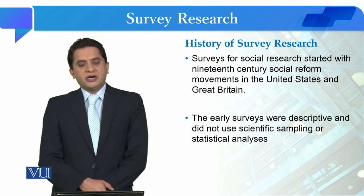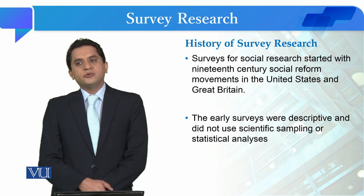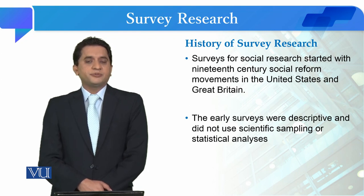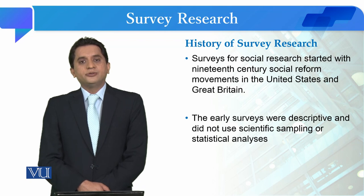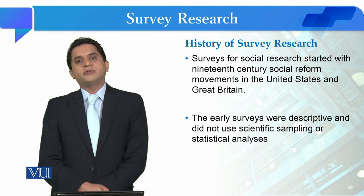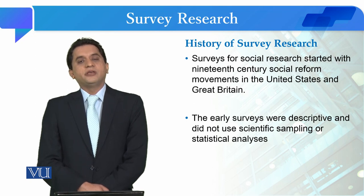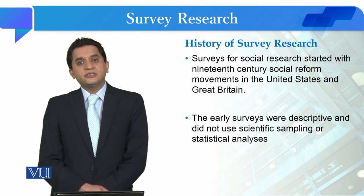The first surveys for social research started within 19th century social reform movements in the United States and Great Britain. The 19th century, known as the century of industrial revolution, saw Europe transform rapidly and lay the foundations of the modern world. To assess this transformation, survey research was the readily available method for social scientists of that time. Early survey research was descriptive in nature.